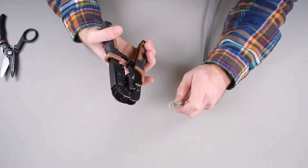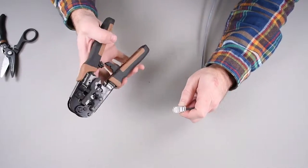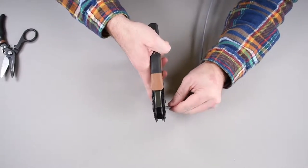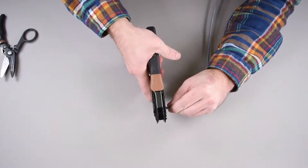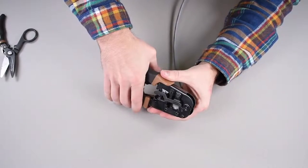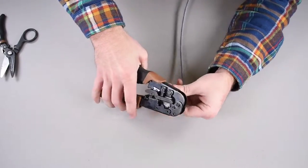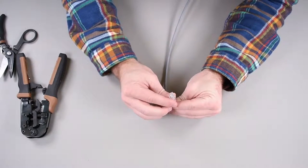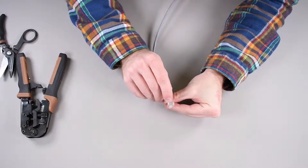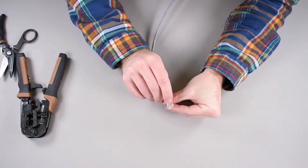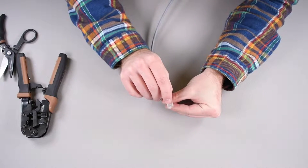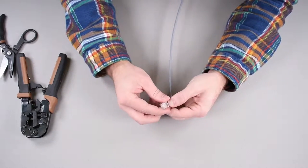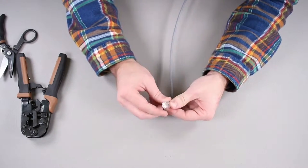It's time to crimp it. So take your crimper, insert it into the RJ45 slot and crimp it down. And then once again, after I crimp it, I will look and see and make sure that all the wires are flush up against the inside of the connector and that each one of these blades was depressed fully.